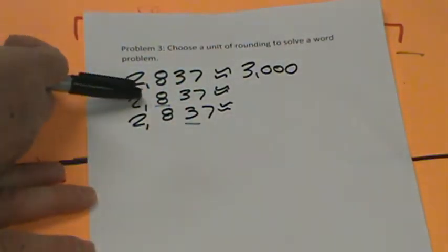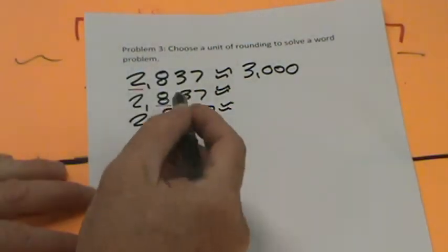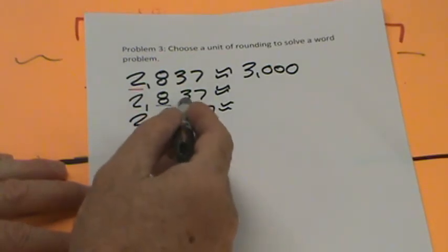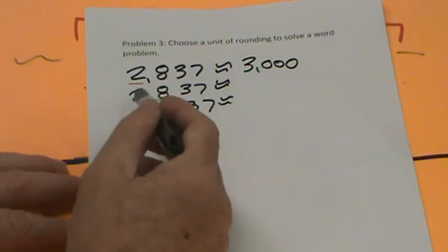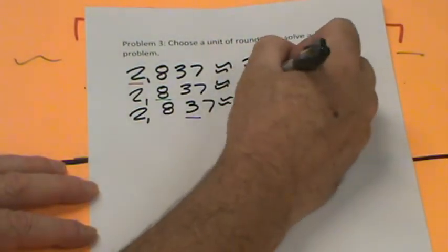What about this one? 2,837. Well, the midway point is 50, right? So is 37 greater than 50? No. So we would stay at 2,800.